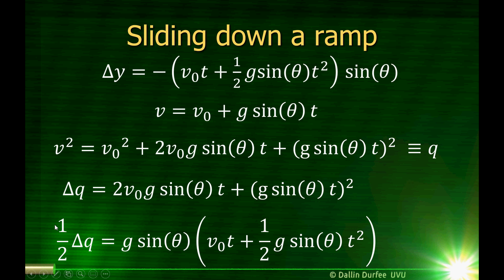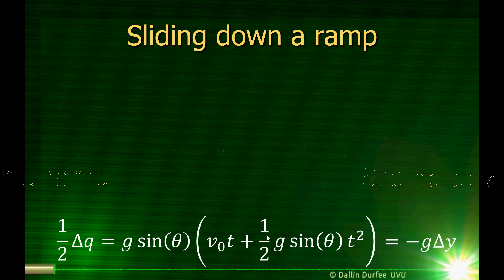Notice if I take this equation and multiply both sides by one-half, and then over here pull out a factor of g sine theta, I get this. And what does this look like? Sine theta times this is just negative delta y. So one-half delta q is equal to negative g times delta y. What we found then was one-half delta q is equal to negative g delta y. But delta q is the change in velocity squared, so we're going to put velocity back in now.